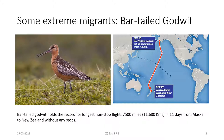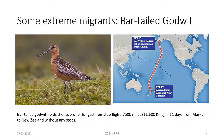The bar-tailed godwit holds the record for the longest non-stop migratory flight. There was one bird radio-tagged from Alaska that flew to its winter grounds in New Zealand — a distance of 7,500 miles, roughly 12,000 kilometers — in an 11-day non-stop journey without stopping even for a day. I'm sure a lot of people might have seen this bird in the field when it comes to winter in India.